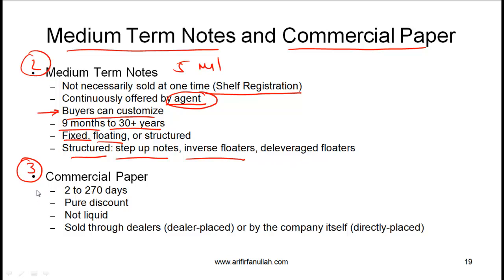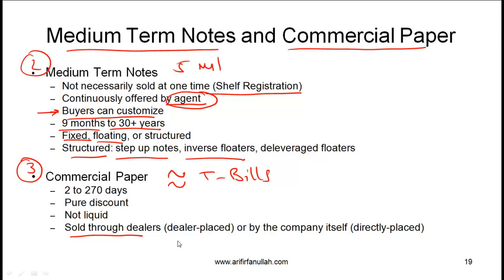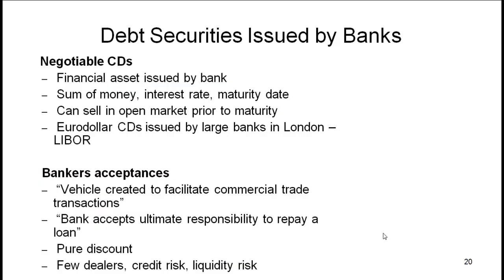Commercial paper is very loosely the corporate equivalent of short-term T-bills. The maturity is typically from two days to 270 days; these are typically pure discount instruments. As an investor you need to recognize that commercial paper is not very liquid. Commercial paper can be sold either through dealers — called dealer-placed — or by the company itself, which is called directly placed.